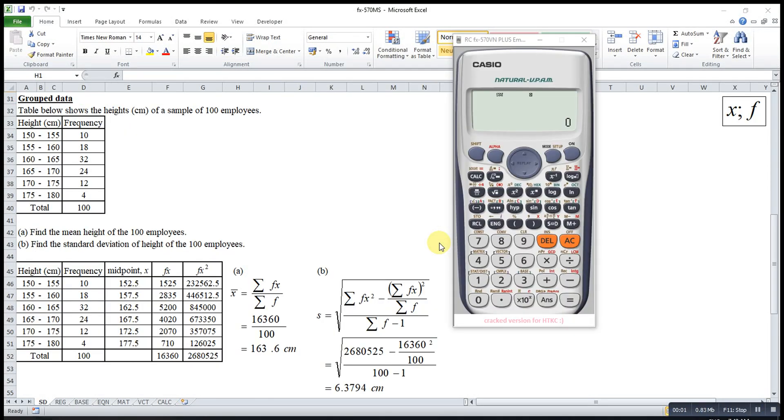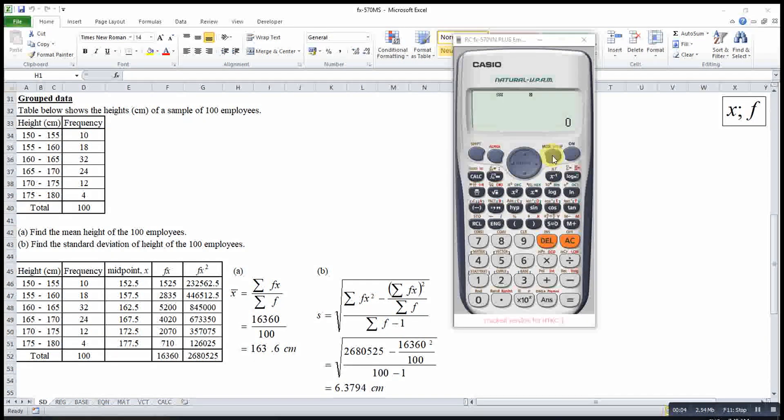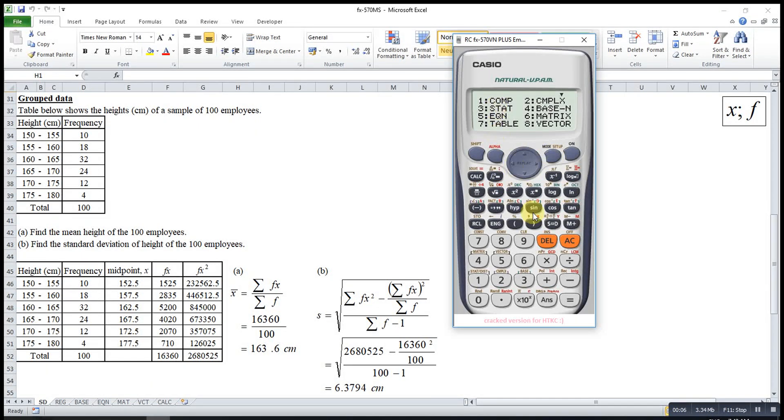Now let's just try for group data. Also press mode. Then we choose step. Okay, also one variable. Since we have a frequency column here.